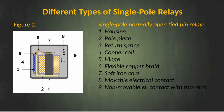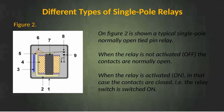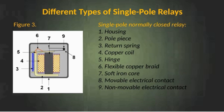Single pole normally open tied pin relay. The components are: 1. Housing, 2. Pole piece, 3. Return spring, 4. Copper coil, 5. Hinge, 6. Flexible copper braid, 7. Soft iron core, 8. Moveable electrical contact, 9. Non-movable L contact with two pins. On figure 2 is shown a typical single pole normally open tied pin relay. When the relay is not activated, the contacts are normally open. When the relay is activated, the contacts are closed, that is the relay switch is switched on.